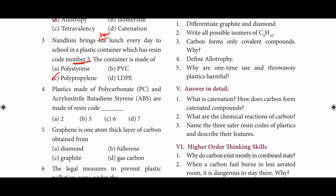Fourth one: plastics made of polycarbonate (PC) and acrylonitrile butadiene styrene (ABS) — what resin code do PC and ABS have? The answer is resin code number 7.